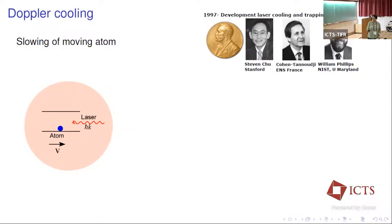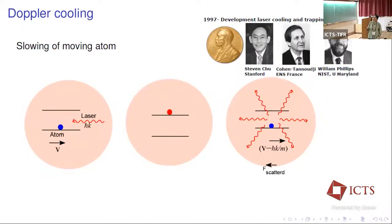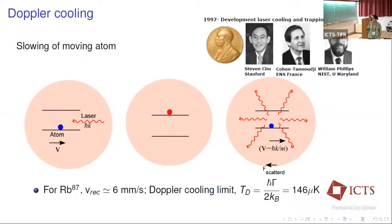Next is Doppler cooling. For the development of Doppler cooling technologies, the 1997 Nobel Prize was awarded to three scientists: Bill Phillips, Cohen-Tannoudji, and Chu. Representing the atom as a simplified two-level system interacting with a counter-propagating photon, when it absorbs a photon it goes to the excited state and then returns to the ground state by spontaneous emission. During this process, the velocity of the atom reduces proportional to the recoil velocity — for rubidium-87, this is on the order of six millimeters per second. This is how we use a laser to cool the atoms or ions in our trap.